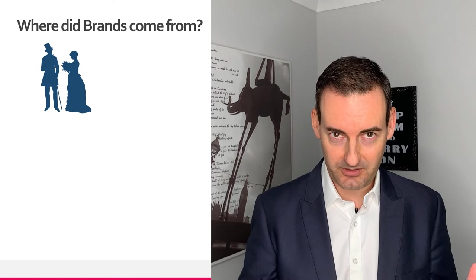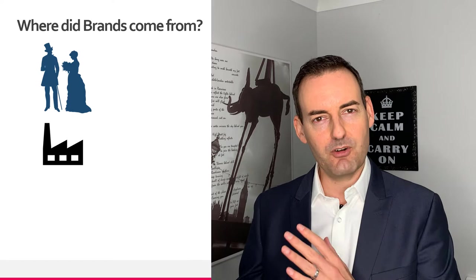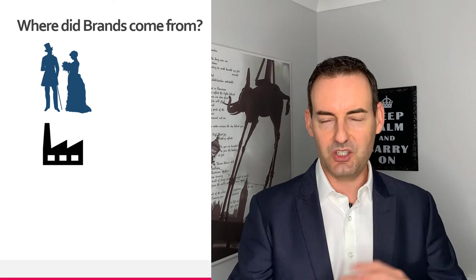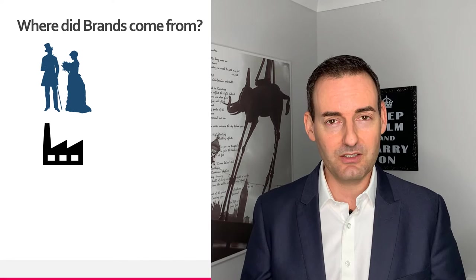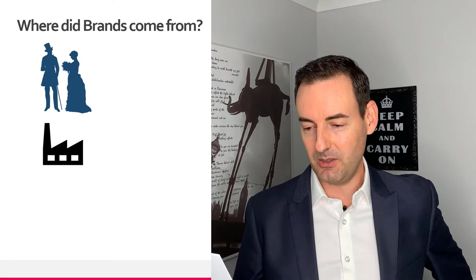Where did brands come from? The answer is the Victorians — the people of Great Britain in the 1800s. The 1800s was a period of incredible development and innovation. The industrial revolution was in full swing, with mass urbanization — people coming from the rural areas and farms to work in the factories in the cities. This explosion of innovation created an incredible amount of things.